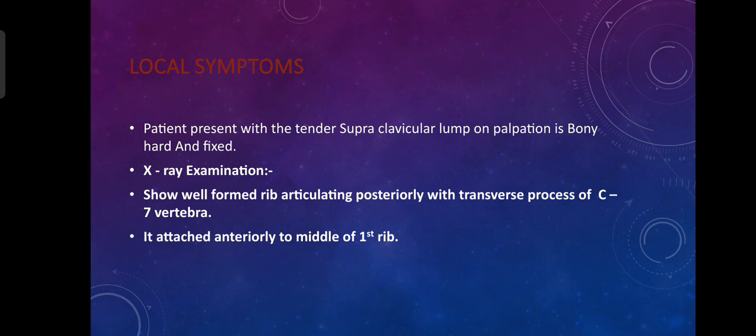For diagnosis, we perform a radiological examination. The X-ray will show a well-formed rib articulating posteriorly with the transverse process of the C7 vertebra, attached anteriorly to the middle of the first rib.